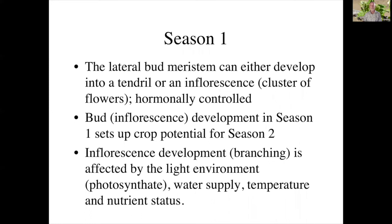That inflorescence developing in season one sets up our crop potential for season two, so the factors that influence season one affect season two. The inflorescence is affected by light — light produces photosynthesis in the adjacent leaves, and that photosynthate enhances the development of that meristem. It's also impacted by water supply, temperature (not too cold), and good nutrient status. All of those factors can influence the development of that bud and inflorescence.